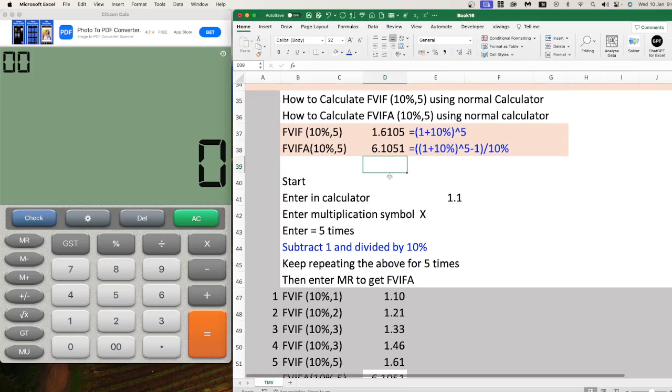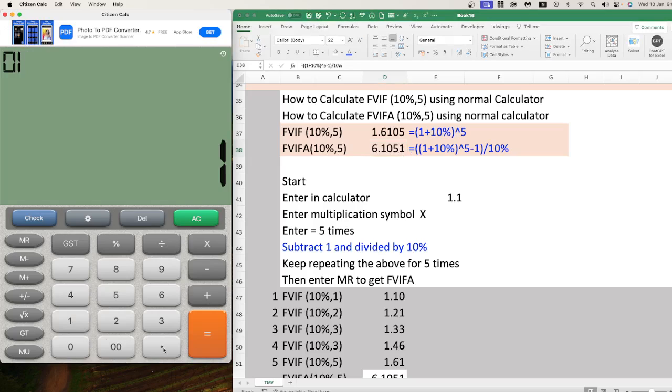If you use Excel formulas, you will get FVIF is 1.6105 and Future Value Annuity Factor is 6.1051. How to calculate using a normal calculator? For 10%, it is nothing but 1 plus 10% which is 1.1.